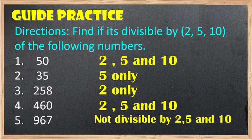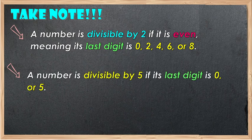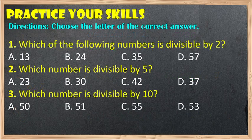I hope you understand how the divisibility rules work. Take note: a number is divisible by 2 if it's even, meaning the last digit is 0, 2, 4, 6, or 8. A number is divisible by 5 if the last digit is 0 or 5. A number is divisible by 10 if the last digit is 0. To further enhance your skills, try to practice. Choose the letter of the correct answer and comment your answer below.